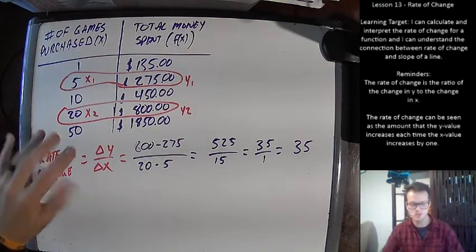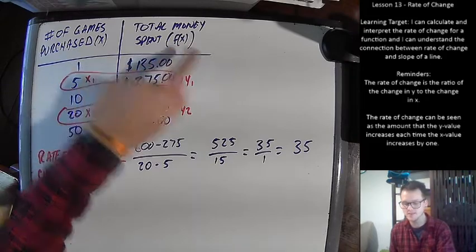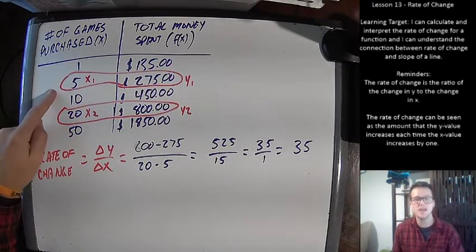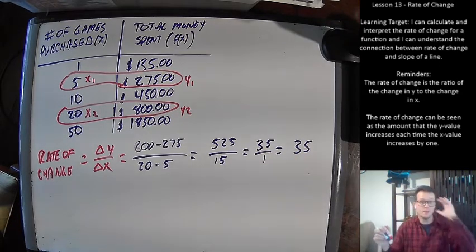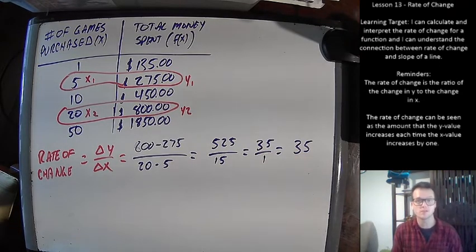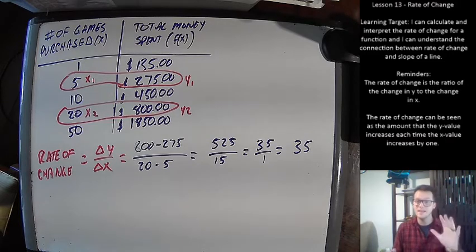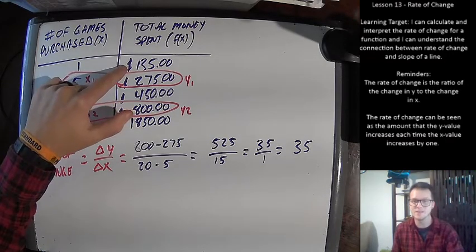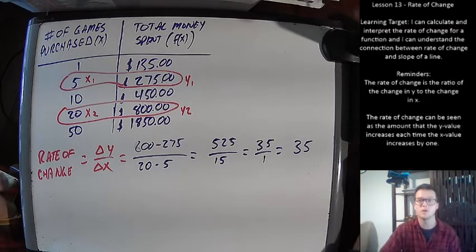What does that mean? Let's interpret that. So this video game situation, that means every time X goes up by one, the F(X) goes up by 35. So every time I buy a new game, I'm paying an additional $35. That means every game I'm purchasing is only $35. This club sounds like a deal all of a sudden, if I'm buying a bunch of games. Again, if I'm only buying one game, not a great deal. But if I'm buying a bunch of games, I'm only paying $35 each and they're brand new in the box. This seems like a good club to be a part of.